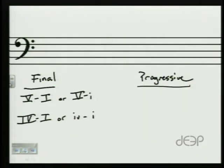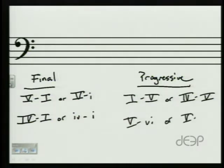Our progressive cadences really fit into two categories as well. Progressive cadences could be a one to five or a four to five in major or minor. The other type is a five to six cadence or a five to six in minor. We're going to dive into each of those in a little bit more detail.